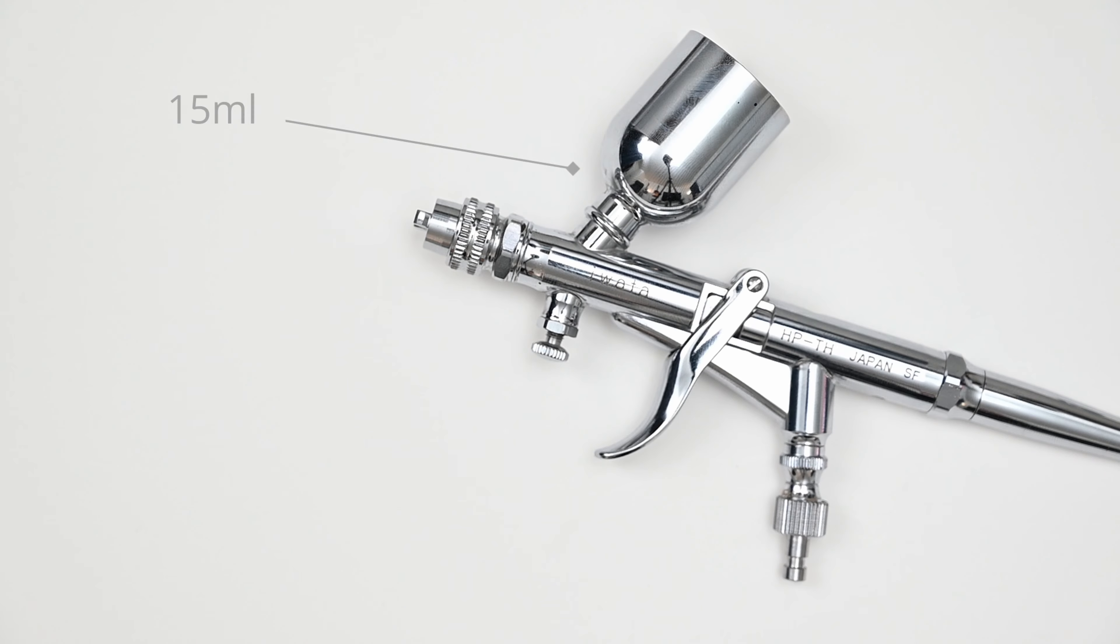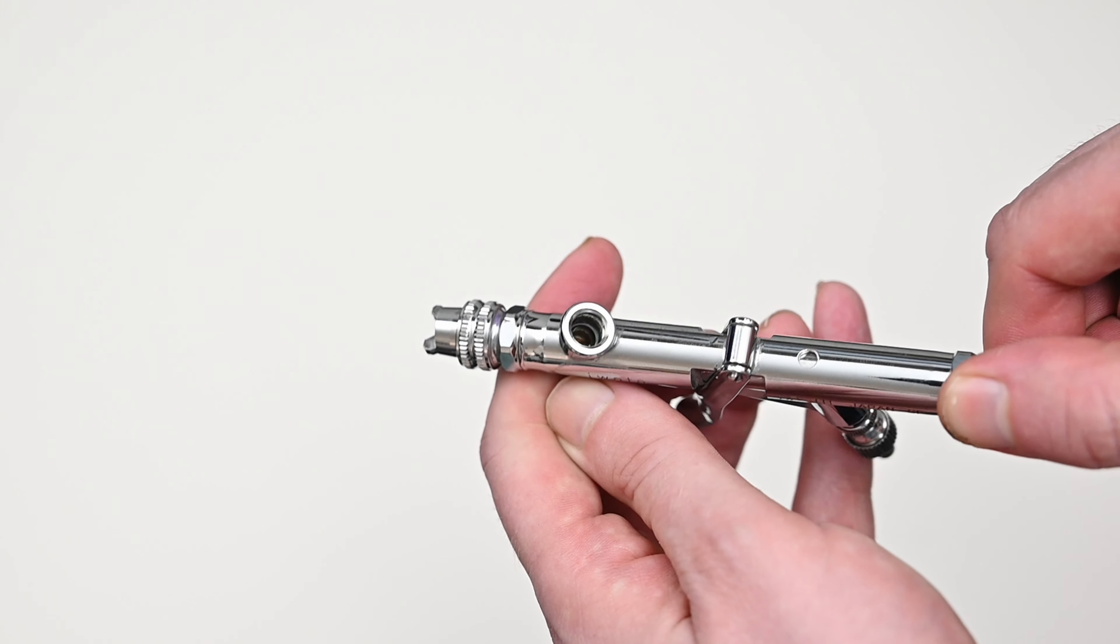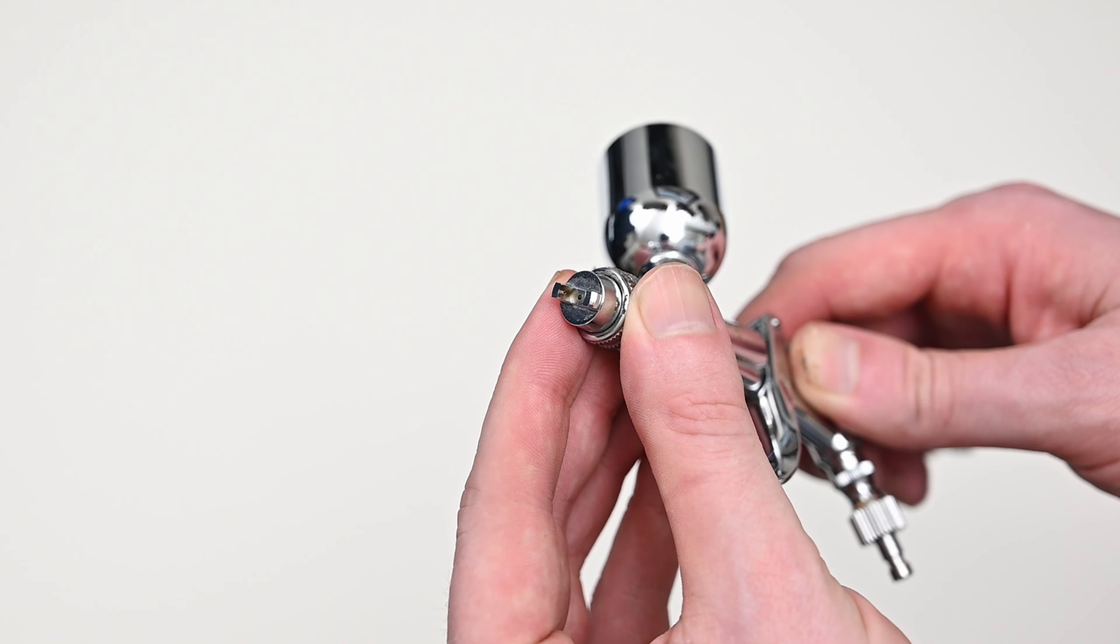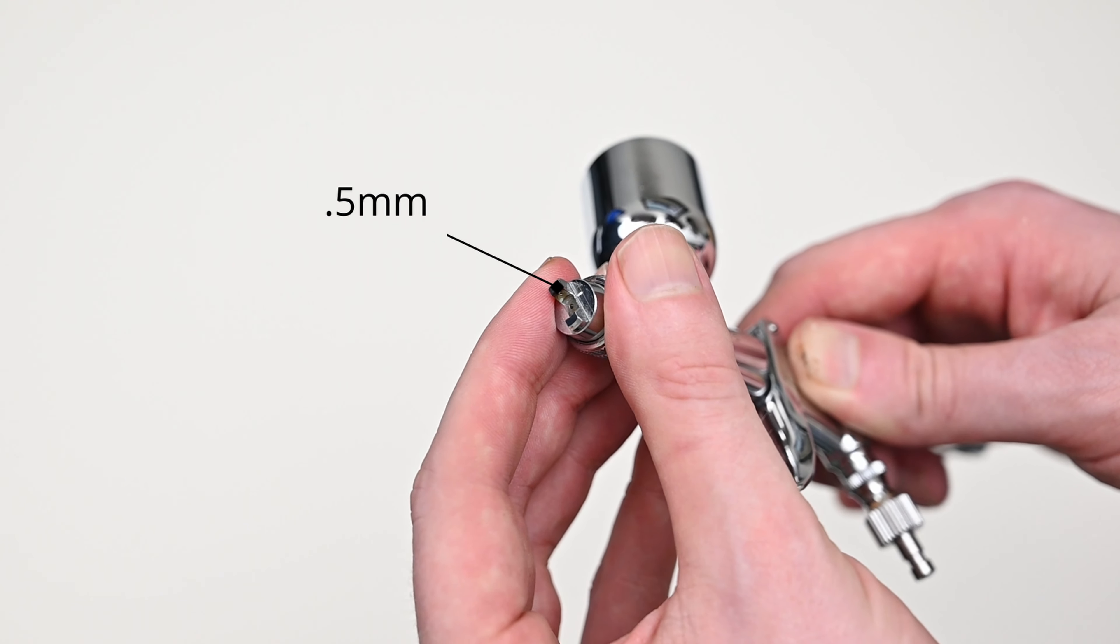The HPTH has a 15 milliliter paint cup which is about a half an ounce. This is a very generous size which will hold a lot of paint and you could remove it and swap it out with a larger one if you need it. But I think for most applications a 15 milliliter paint cup is more than enough.